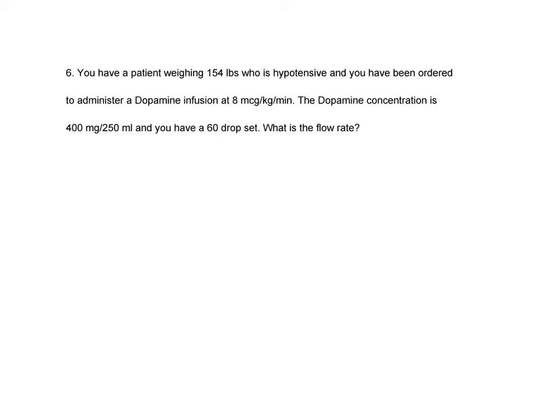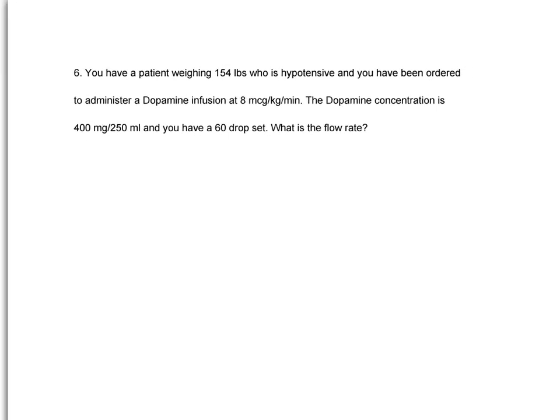Okay, so we'll start. We know that our answer is going to be drops per minute. So we'll start there, equals, and whenever we have a flow rate, the next thing we want to enter in is our drip set. So we have a 60 drop set, where one milliliter times our concentration on hand is 400 milligrams in 250 mLs.